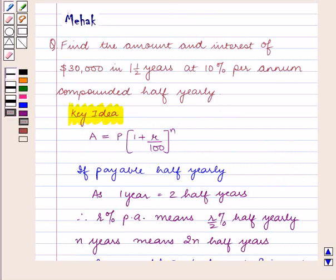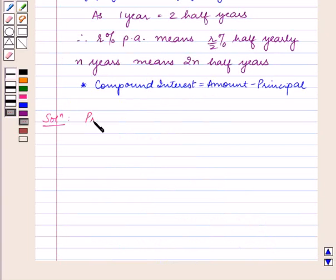According to the question, we need to find the amount and interest of $30,000 in 1.5 years at 10% per annum, compounded half-yearly. So, we are given the principal P = $30,000.